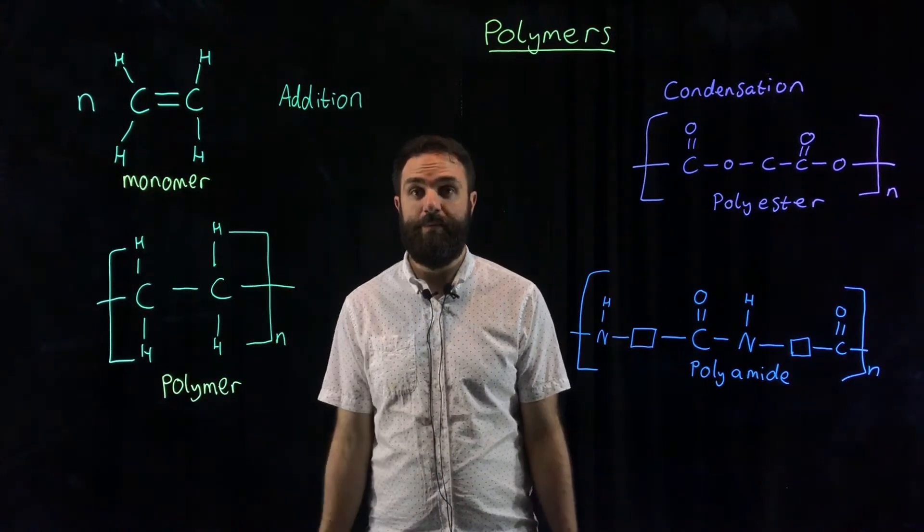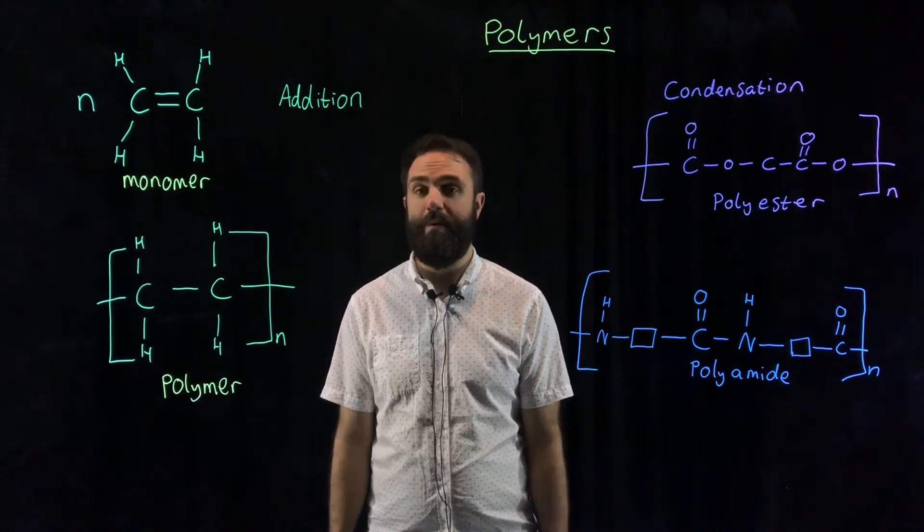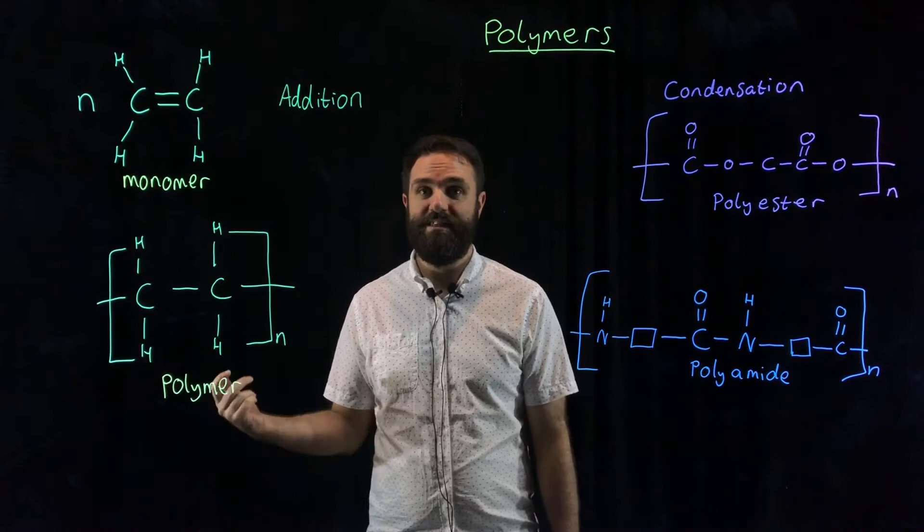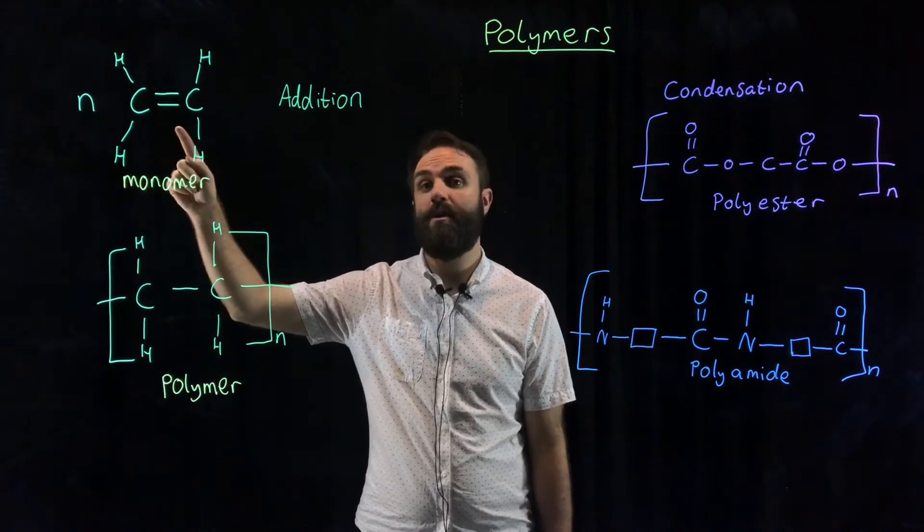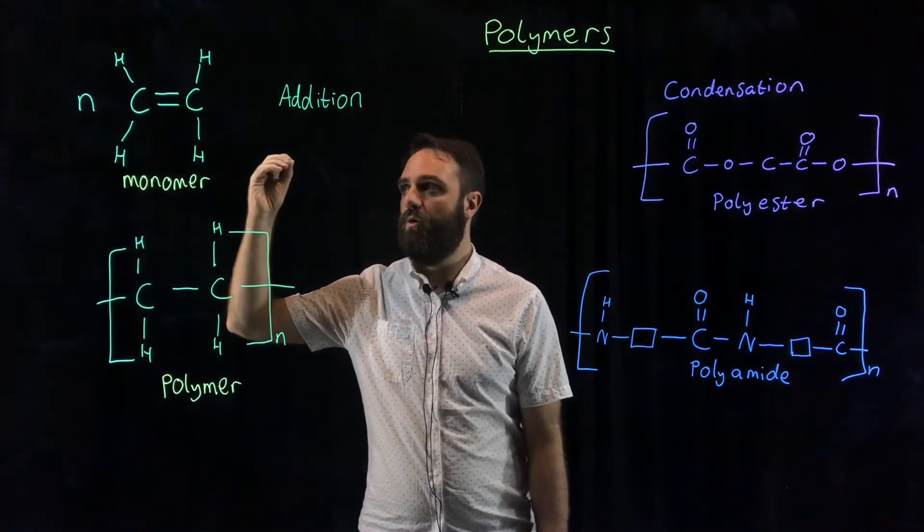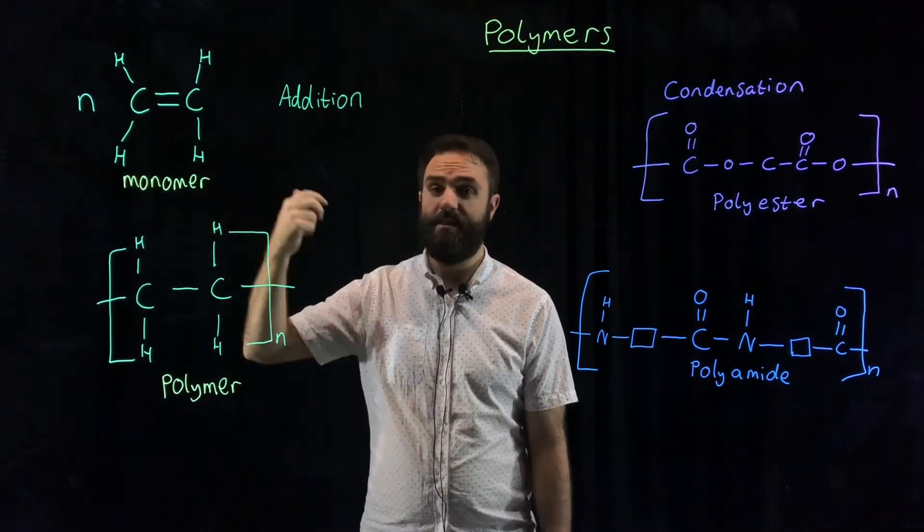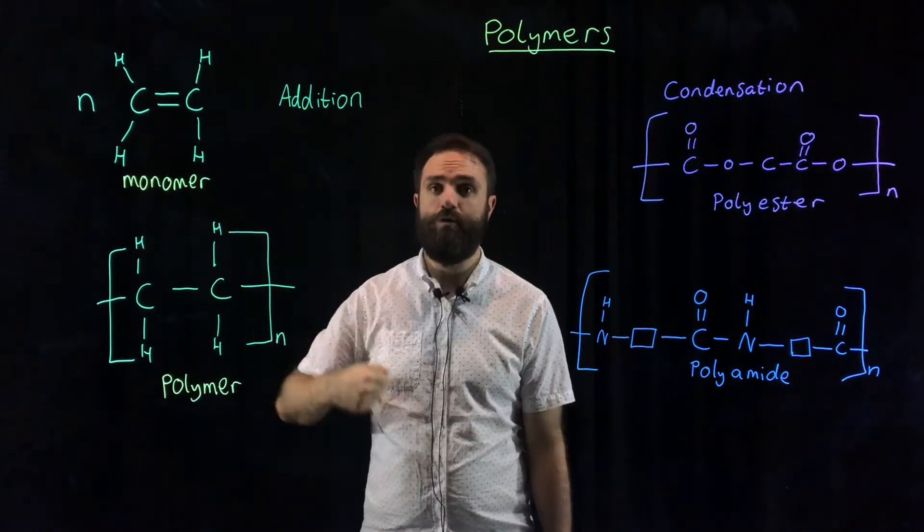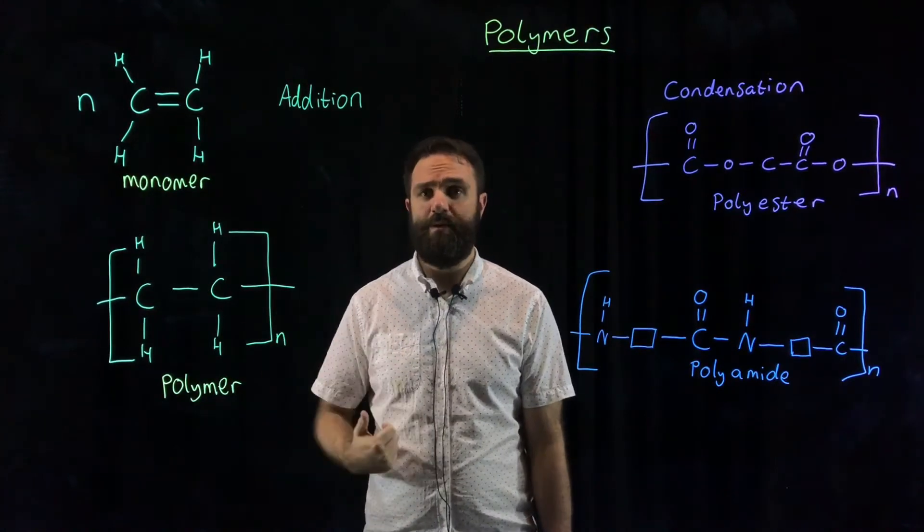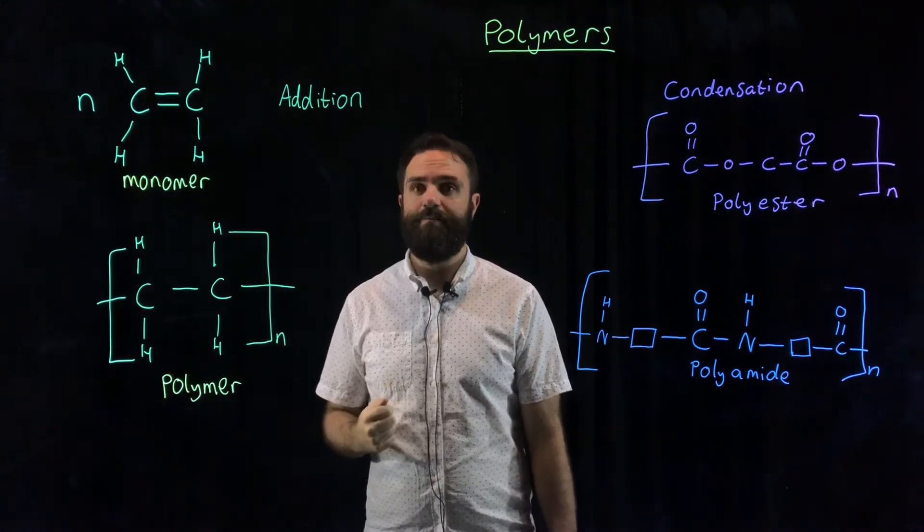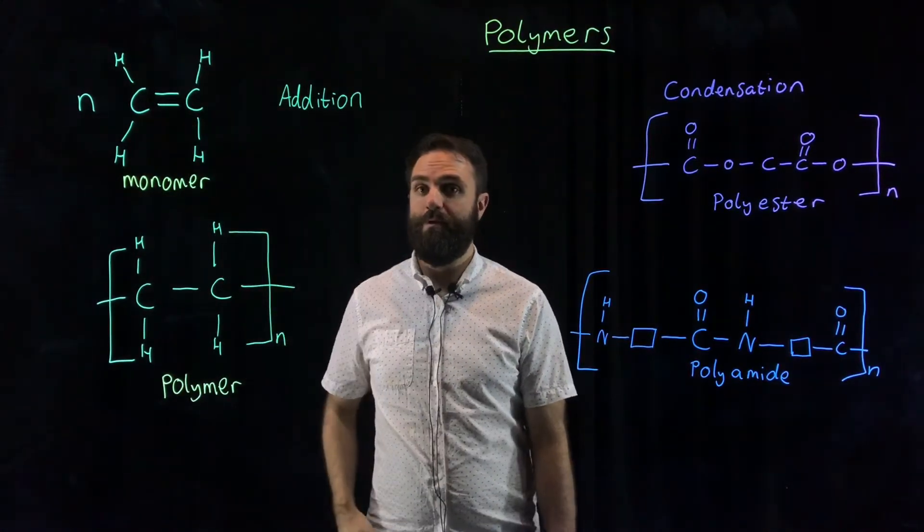Addition is possibly the simpler of the two methods for making a polymer. Now in order to do that you need to have a monomer that contains a double bond, a carbon-carbon double bond. So you're looking at alkenes for this or things that contain the alkene double bond. You can have side groups and other things as well. The simplest one to look at to understand how this works is the simplest alkene, ethene. So ethene has this double bond in the middle.